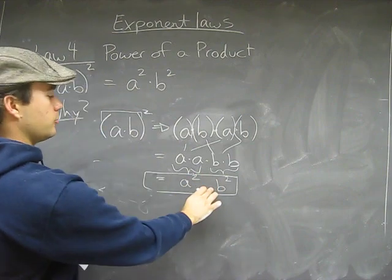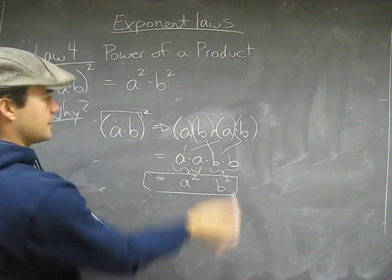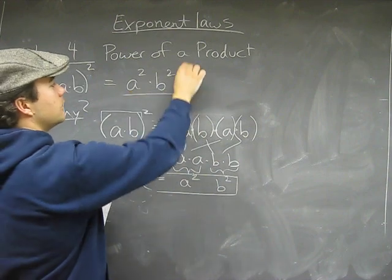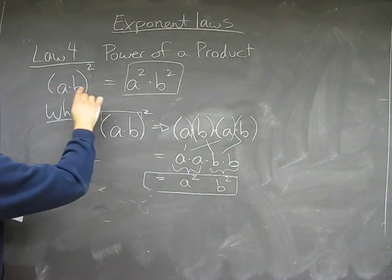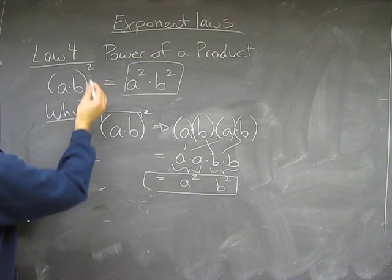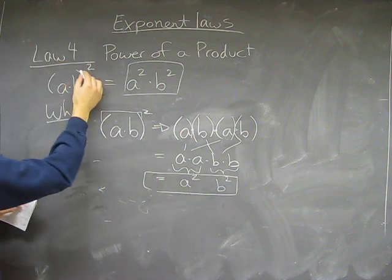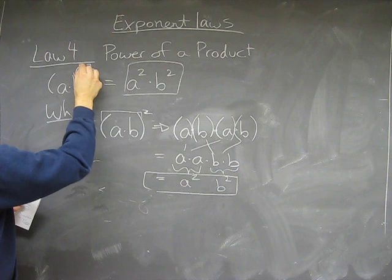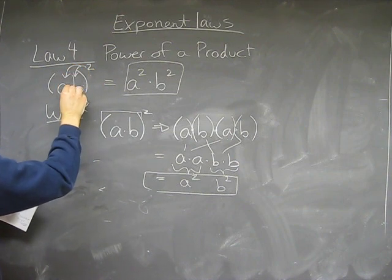A squared b squared. Isn't that what we just had up here? When we recognize this exponent on the outside of brackets, the important thing is we apply it to every term inside here.